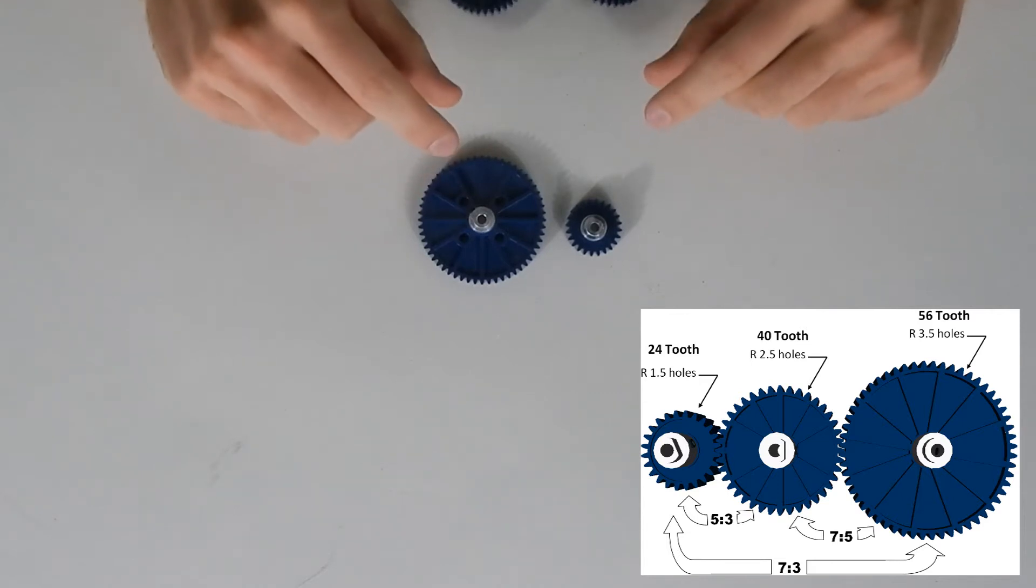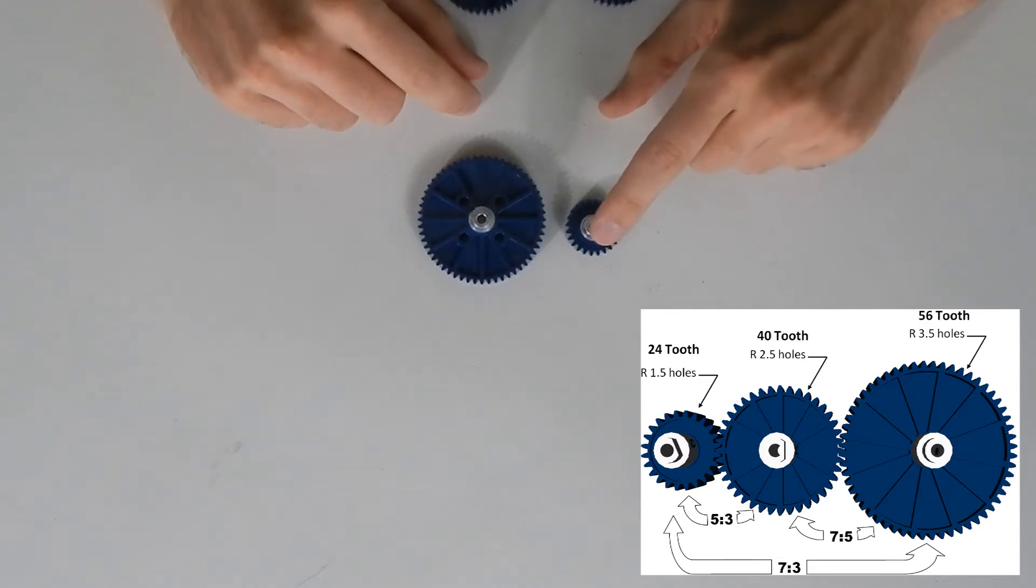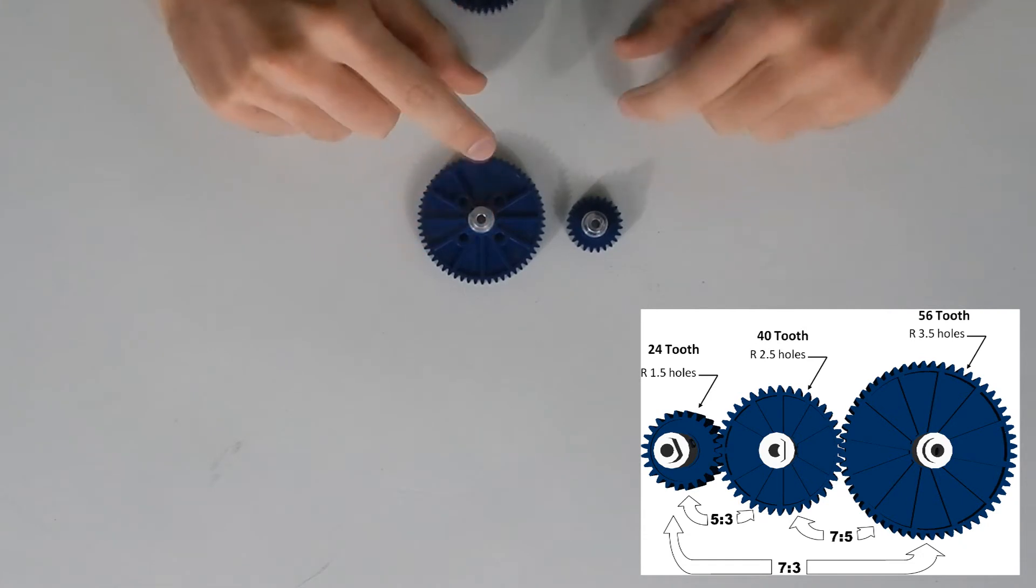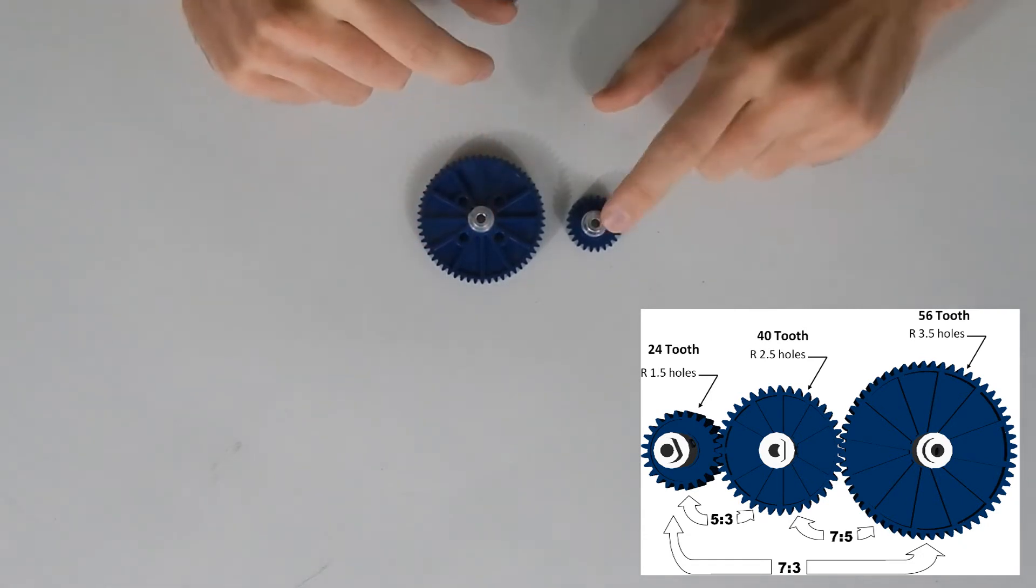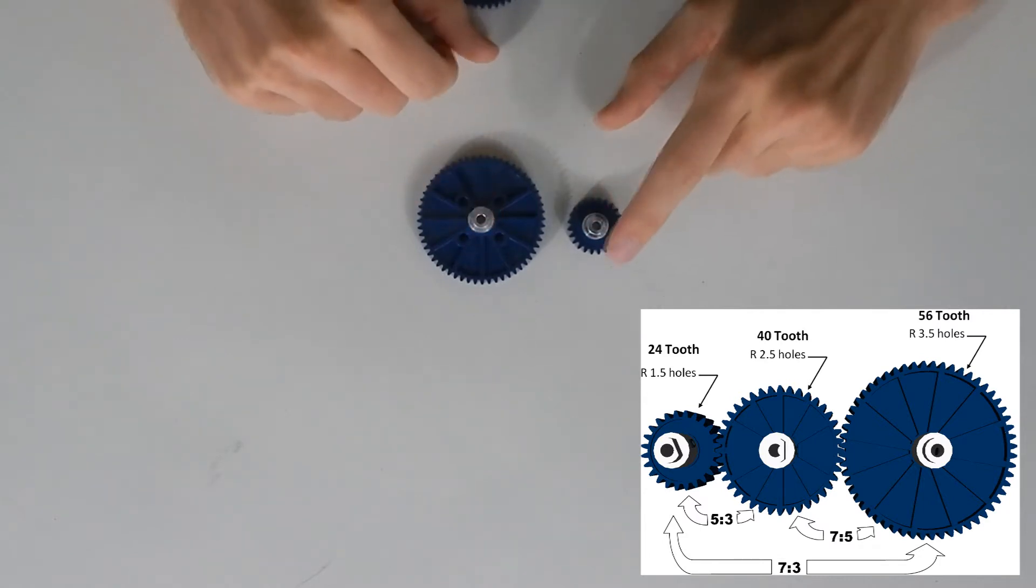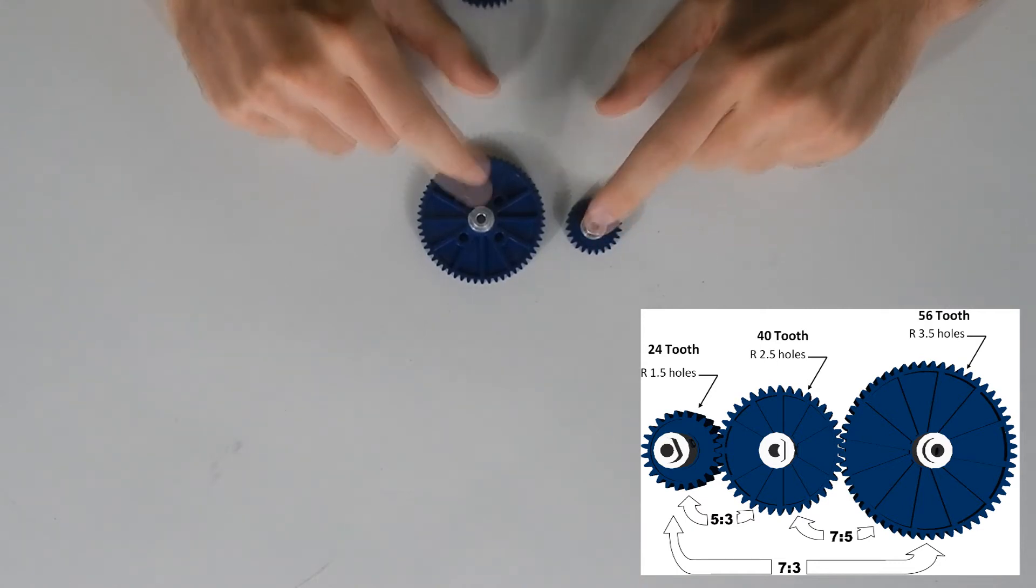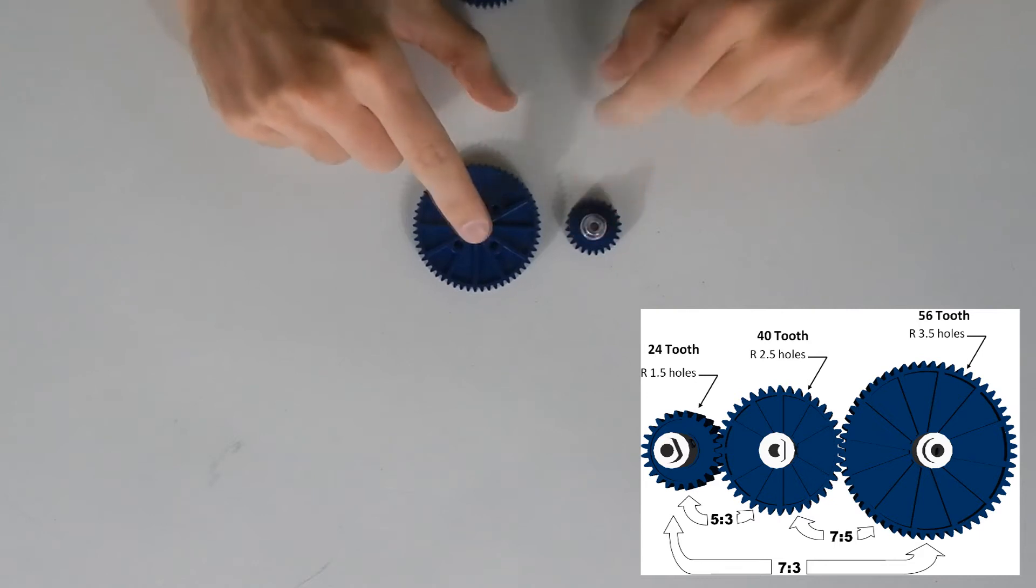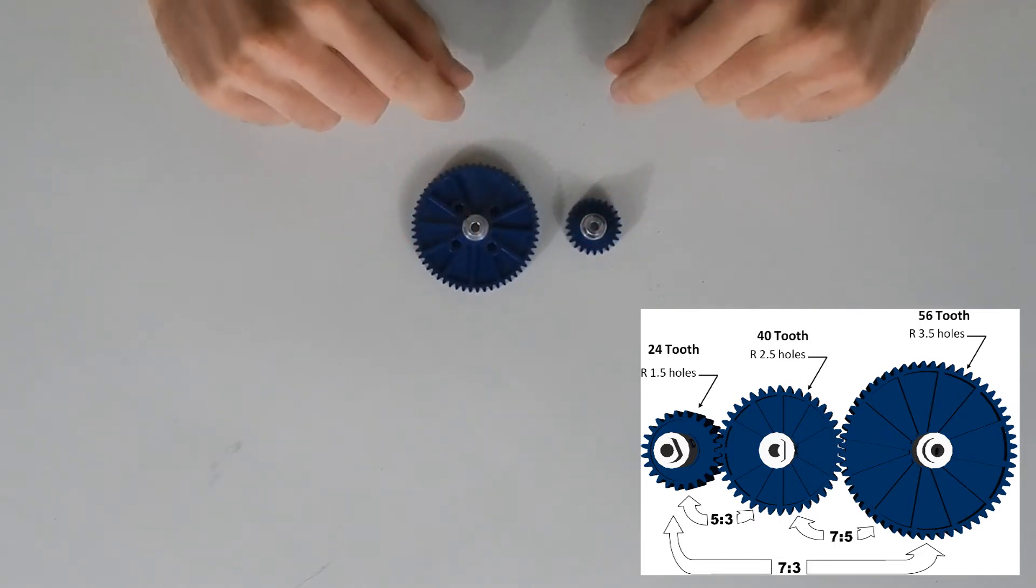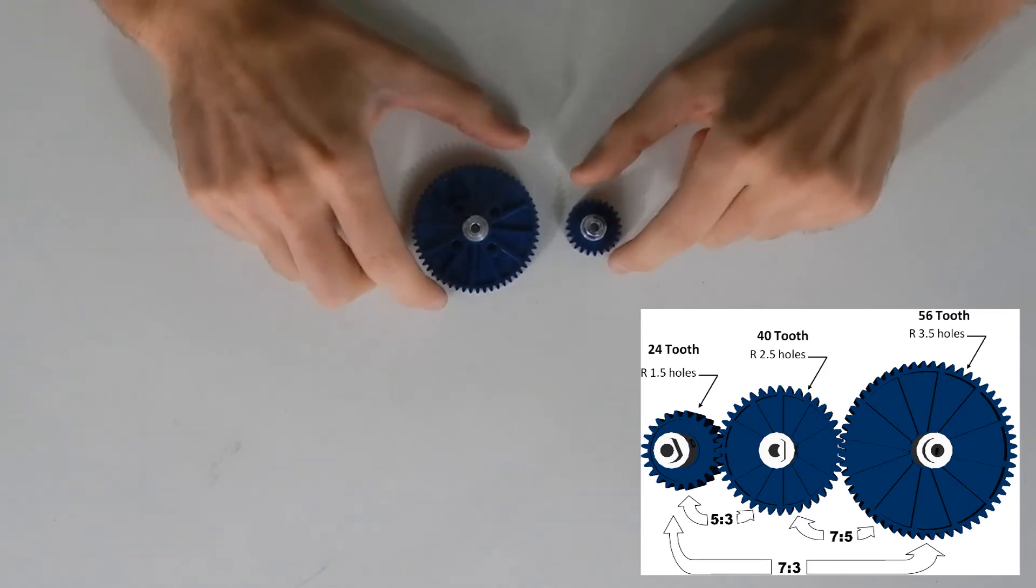Now the torque that you get out of it is going to be the opposite. So the torque out of the small gear would be a factor of three and the big gear would be a factor of seven. If you want to find the torque, you can take whatever torque you're putting into the small gear, divide it by three and multiply it by seven because the torque is a ratio of three to seven. The speed is a ratio of seven to three. You can either make things drive fast or drive with a lot of torque.